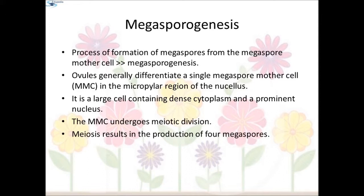Megasporogenesis: the process of formation of megaspores from the megaspore mother cell is called megasporogenesis. Ovules generally differentiate a single megaspore mother cell (MMC) in the micropylar region of the nucellus — the top portion of the ovule. It is the largest cell, containing dense cytoplasm and a prominent nucleus. The MMC undergoes meiotic division, and meiosis results in the production of four megaspores.